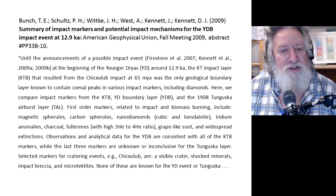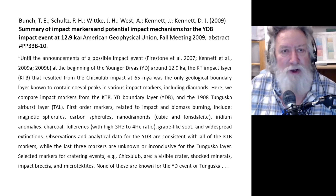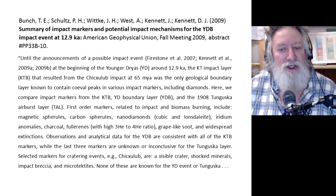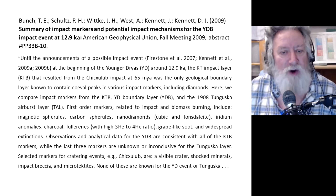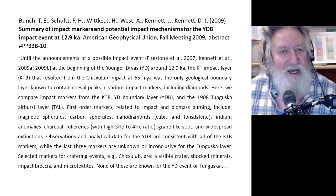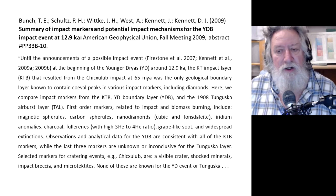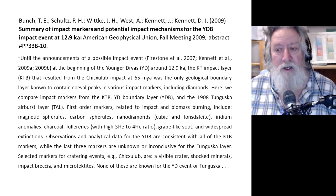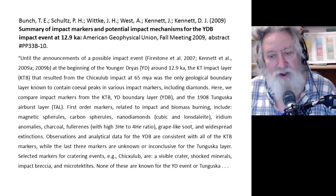First-order markers related to impact and biomass burning include magnetic spherules, carbon spherules, nanodiamonds — both cubic and Lonsdaleite — iridium anomalies, charcoal, fullerenes, grape-like soot, and widespread extinctions. Observations and analytical data for the Younger Dryas boundary are consistent with all of the Cretaceous-Tertiary boundary layers, while the last three markers are unknown or inconclusive for the Tunguska layer.